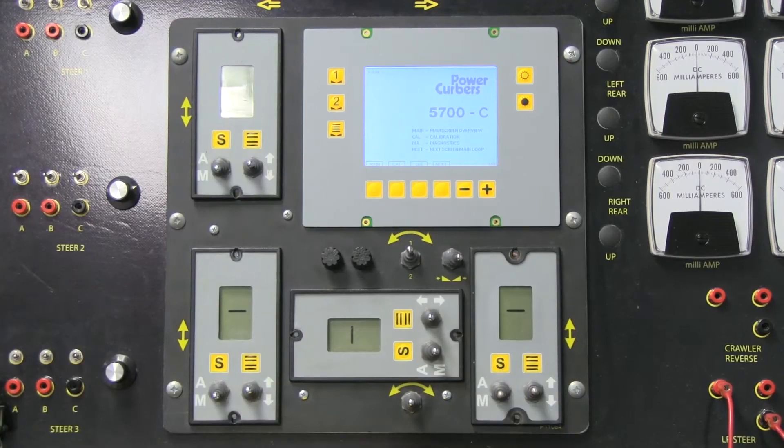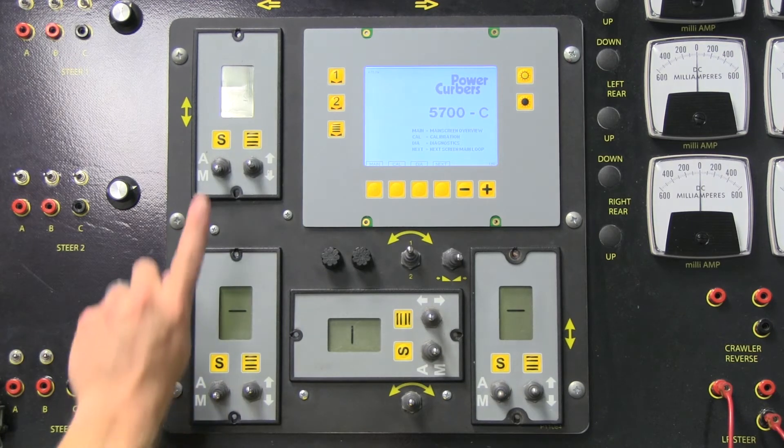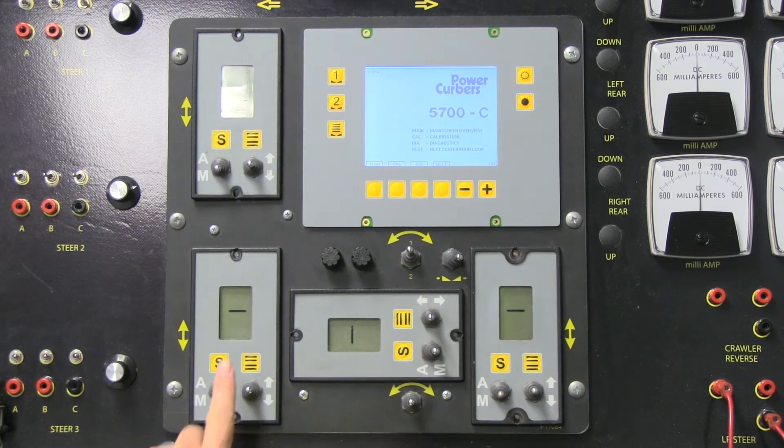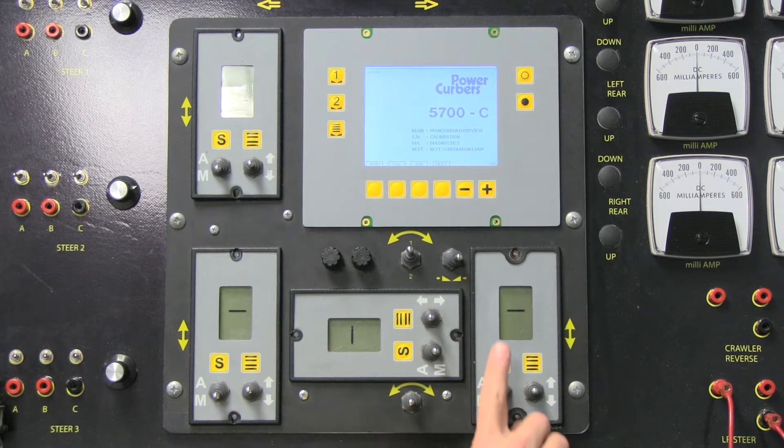The position of the Smart Amp on the control panel indicates the function that it controls: Front Grade, Rear Grade, Steering, and Slope.